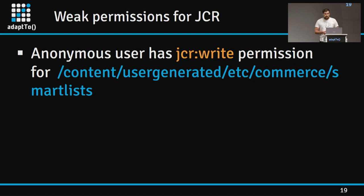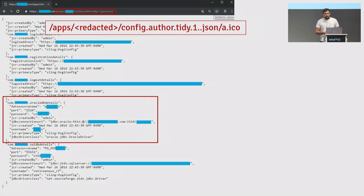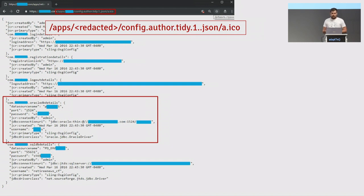On many IAM applications, I observed that /content/usergenerated/etc/commerce/smartlists was writable by anonymous users, making IAM vulnerable to various attacks. In one example, read permissions to an OSGI instance configuration were given to the anonymous user — the configuration stored a username and password in cleartext to access an internal database management system. Access was restricted only at the dispatcher level, while it should also be done at the GCR level. I added a /a.ico suffix to the URL to bypass the dispatcher and access the credentials.